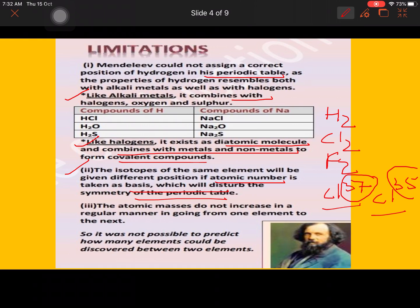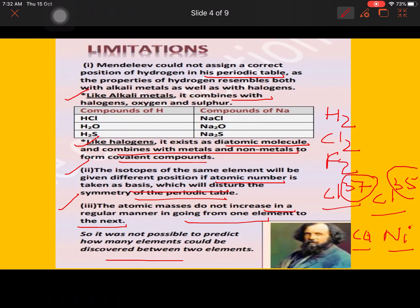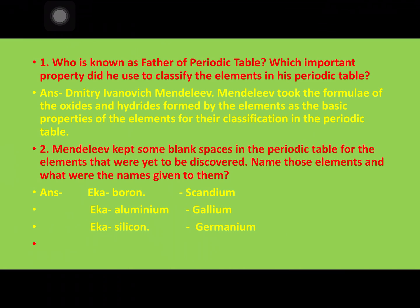The third limitation is that atomic mass does not increase in a regular manner going from one element to the next. Mendeleev himself denied his own basic principle in the case of cobalt and nickel — cobalt was placed before nickel, as was also done by Newlands. It was also not possible to predict how many elements could be discovered between two elements. These three limitations resulted in the discarding of Mendeleev's periodic table and the formation of the modern periodic table, which will be studied in the next worksheet.